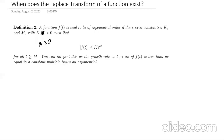And it's basically this definition. A function f(t) is said to be of exponential order if there exist constants a, k, and m, where a is arbitrary, k is greater than zero, and m is greater than or equal to zero, such that the absolute value of f(t) is less than or equal to k times e to the at, for all t greater than or equal to m.